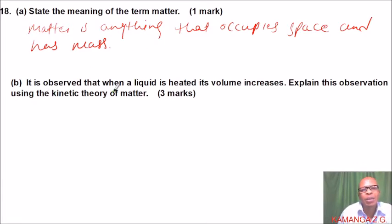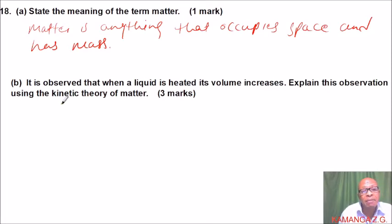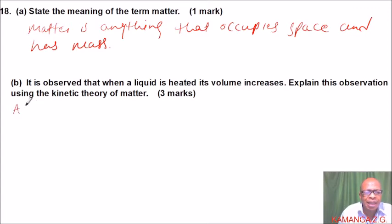It is observed that when a liquid is heated, its volume increases. Explain this observation using the kinetic theory of matter. When you increase heat, the molecules gain energy, which we call kinetic energy — kinetic means movement. So they start vibrating. Whether it is a solid, liquid, or gas, the molecules start moving and therefore increase the space between them, and that is the reason why the volume increases.